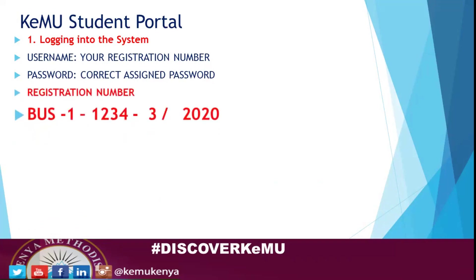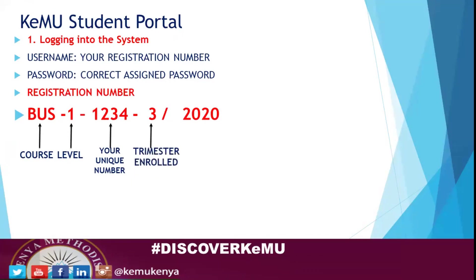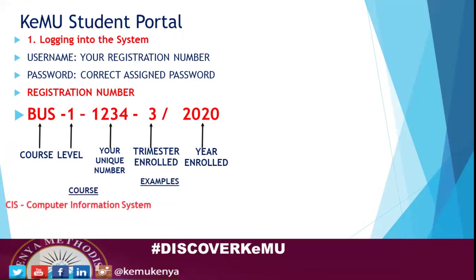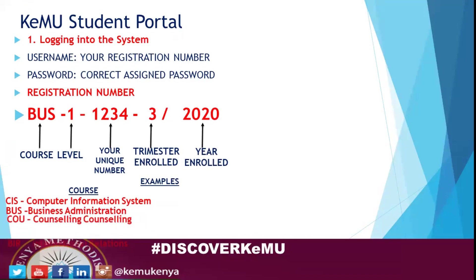Your registration number comes in different parts. You may have BUS, your colleague has COU, another has CIS, another has BMS. The first part is the course code — three characters. The second is the level of study. The middle number is your unique number — no other person shares that number in the current year. Examples: CIS is Computer Information Systems, BUS is Business Administration, CAU is Counseling, and BIR is International Relations.